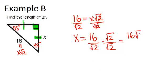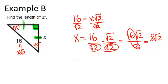It's 16 root 2 over 2 because root 2 times root 2 is root 4 which is 2 and then we can simplify this. 16 divided by 2 is 8 so we get 8 root 2. Our answer is x equals 8 root 2.